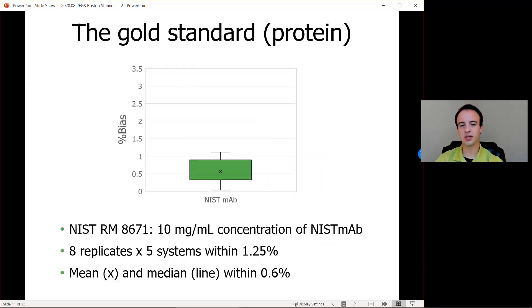Applying the same sort of test to a NIST reference material 8671, also more commonly known as NISTmAb, we see a representative test for a therapeutic antibody characterization. All measurements in the five tested systems were within 1.25% of the 10 micromolar reference concentration of NISTmAb. That's shown by the whiskers of the box and whisker plot. The mean concentration shown by the X and the median concentration shown by the green line were all within 1% of the reference value. So it's a great example of how you can really quickly assay accuracy for UV-Vis performance on Stunner.